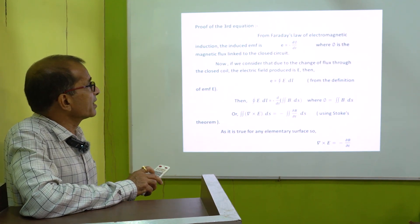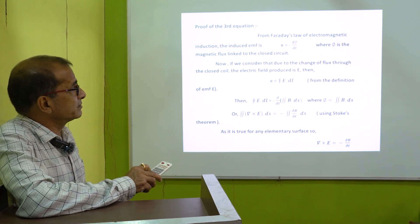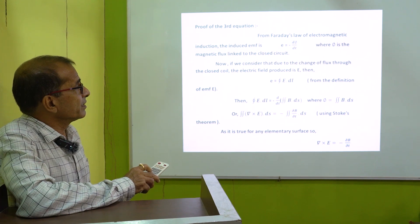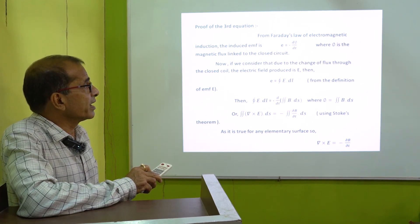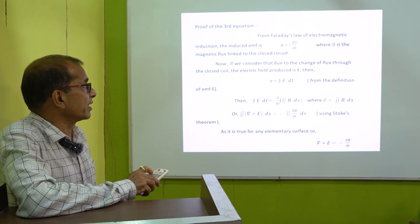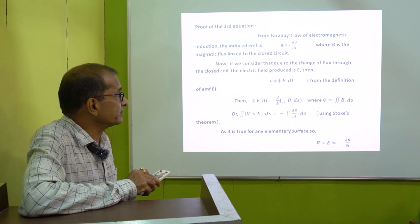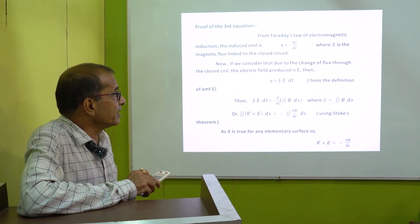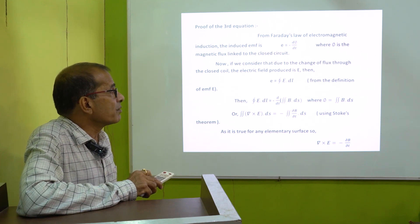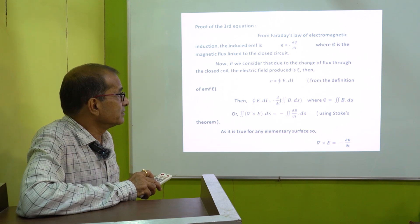Now we are going to prove the third equation. From Faraday's law, the rate of change of magnetic flux dΦ/dt is equal to the emf produced in the circuit. The negative sign we get from Lenz's law. From the definition of the electric field, emf produced in a circuit E equals ∮E·dL — the work done in completing a circuit.